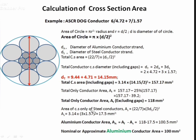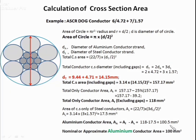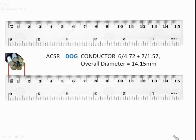Now we calculate the steel strands area, which comes out to be 17.5 mm². To calculate aluminium conductor area, we subtract the steel conductor area. The aluminium conductor area comes out to be 100.5 mm², so the nominal aluminium conductor area is 100 mm². When we call a 100 mm² conductor, it means its aluminium area is 100 mm².